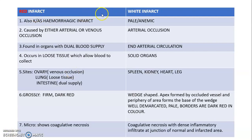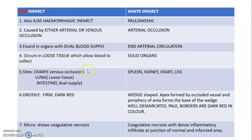Comparing red and white infarcts: red infarct is caused by arterial or venous occlusion, while white infarct is due to arterial occlusion only. Red infarct occurs in organs with dual blood supply, while white infarct is seen in end-arterial circulation. Red infarct occurs in loose tissue that allows blood to collect, while white infarct occurs in solid organs.